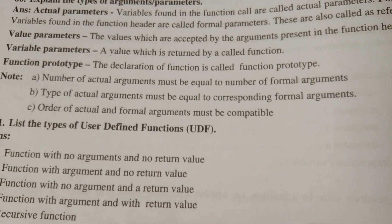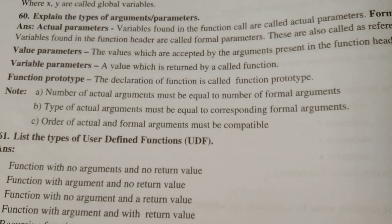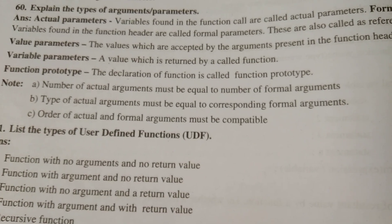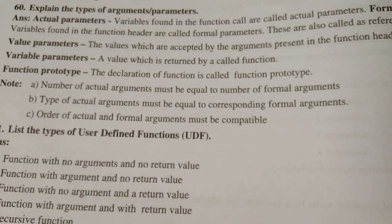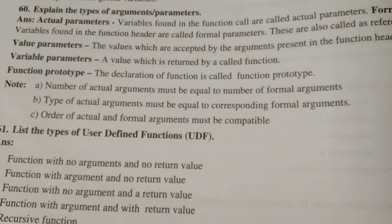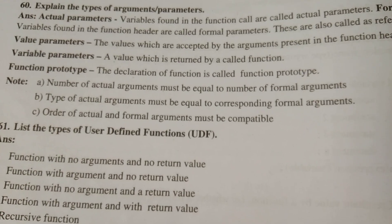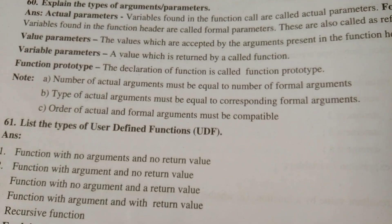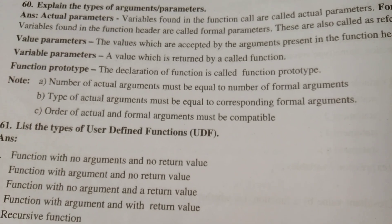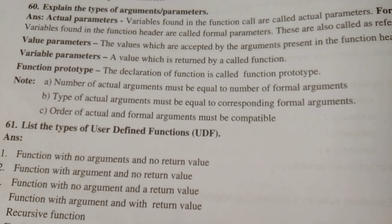Variable parameters are values which are accepted by the arguments present in the function header, or a value which is returned by a called function. The declaration of a function is called a function prototype.